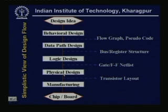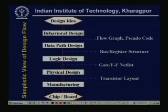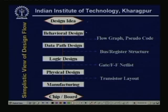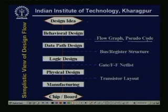Now we give a very simple view of the design flow. Given the system to be implemented, the designer must have the idea at some abstract level — how it can be implemented in hardware. We are calling that the design idea. Then the whole design behavior is represented. This can be a flow graph or this can be a pseudo code.